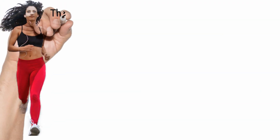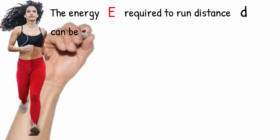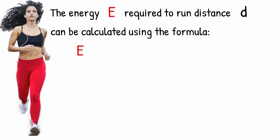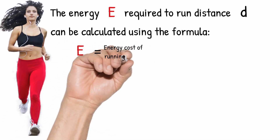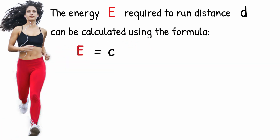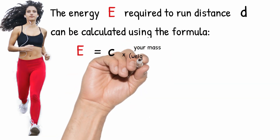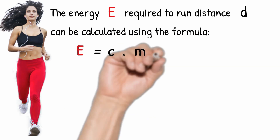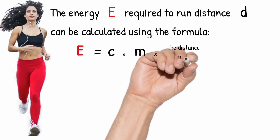Your body uses energy to do anything, and the power you use is just using up that energy. So when we want to understand power, we really have to understand energy and how it reacts and what we can calculate from it. When we run, it requires energy. The energy E required to run distance D can be calculated using the formula: E equals the energy cost of running, generally 0.98 — which we'll call C — multiplied by your mass in kilograms M, multiplied by the distance in kilometers D.